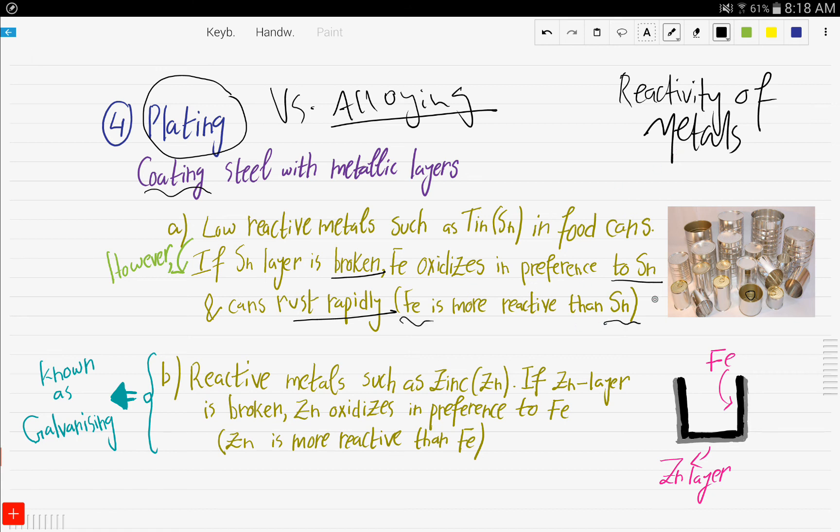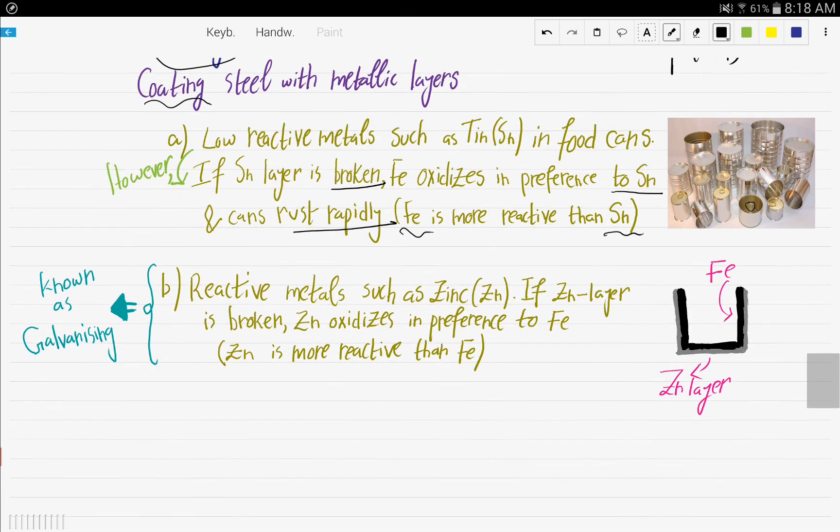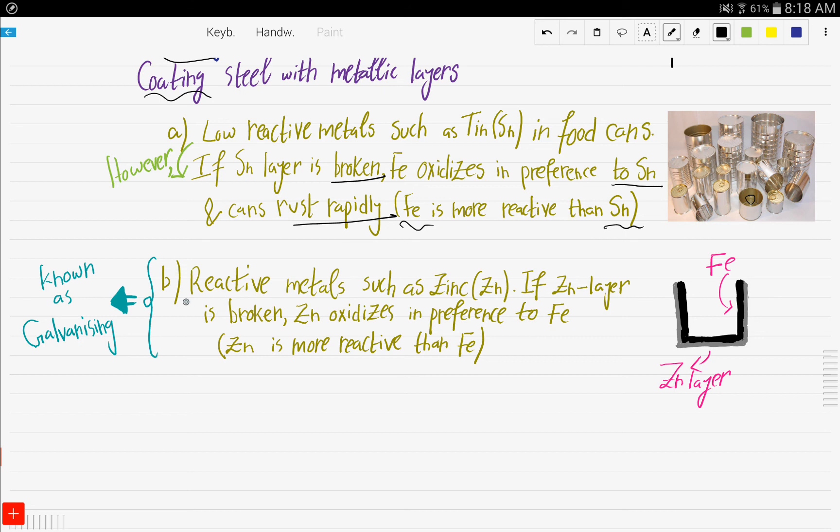Now, the next example is coating iron with reactive metals such as zinc, and this is known as galvanizing. You need to know this term: galvanizing is coating iron with zinc. The good thing about this, in comparison to tin, is that if the zinc layer gets broken, it will oxidize in preference to iron because it is more reactive than iron. From the reactivity series, zinc comes before iron.